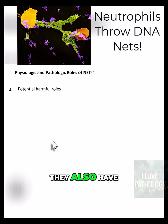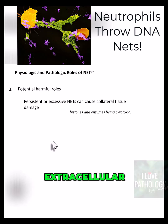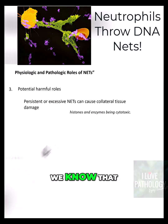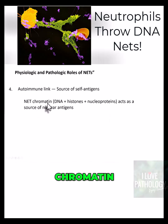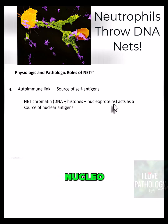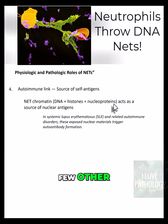They also have a harmful role to the body, because persistent or excessive neutrophil extracellular traps can cause collateral tissue damage, since the histones and enzymes are cytotoxic. The NET chromatin, which contains the DNA, the histones, and the nuclear proteins, acts as a source of nuclear antigens, particularly in the case of systemic lupus erythematosus and a few other autoimmune disorders.